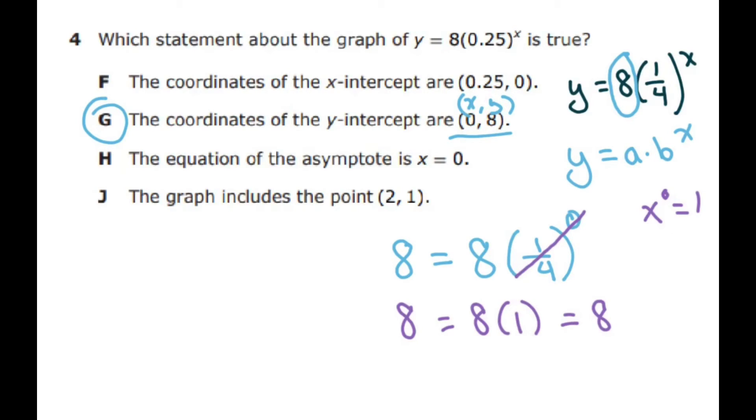So this is the right answer. You could have plugged in this one and you would have got 0 equals 8 times 0.25 to the 0.25 but that's just kind of difficult. I don't even know how much in algebra 1 you get into asymptotes and you could also use a calculator and check it. But the y-intercept is the easiest one to check and there's always going to be one like that on the STAR.